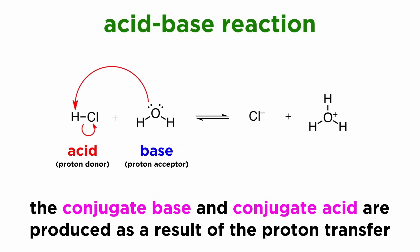We will be producing a conjugate base and a conjugate acid, which are the molecules that are produced as the result of the proton transfer.